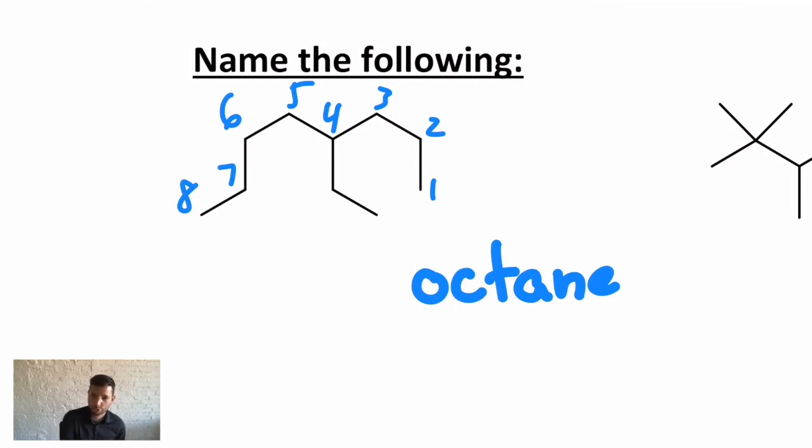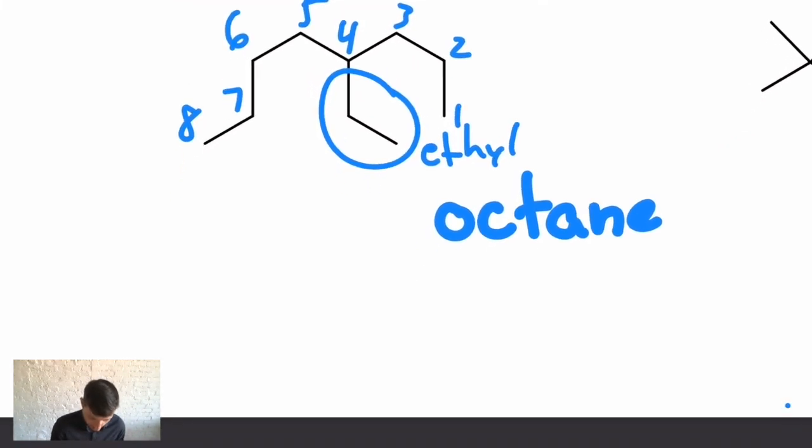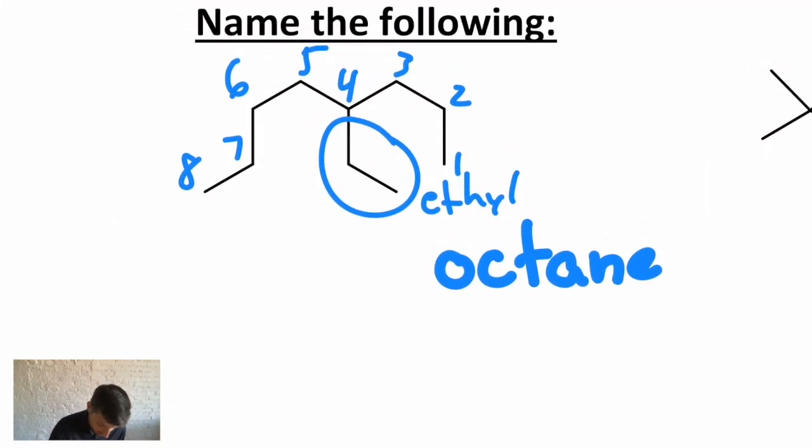For now, later we'll get to molecules that contain functional groups and we'll see that those get higher priority. But what we have is an ethyl, and it's on carbon number 4, and that's the only branch. The rest of this is just an octane. So this is not octane—this is ethyl octane, all one word, and then I put a 4 and a dash in front of it: 4-ethyloctane.